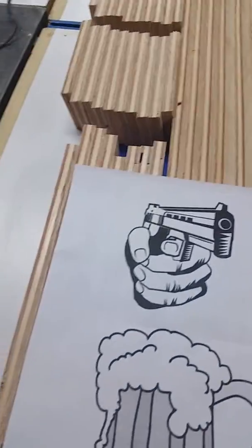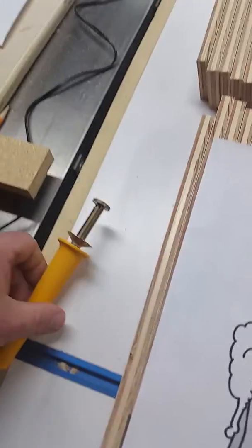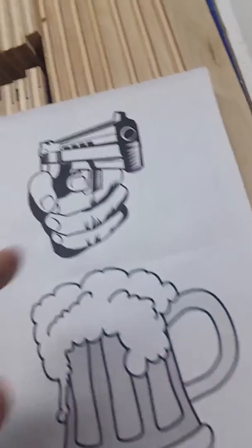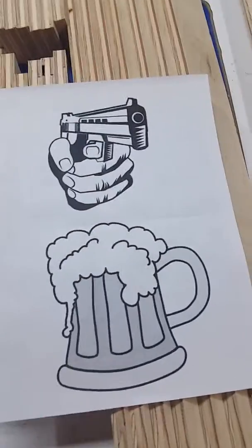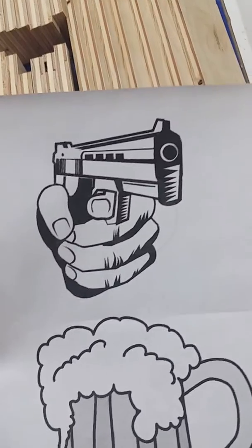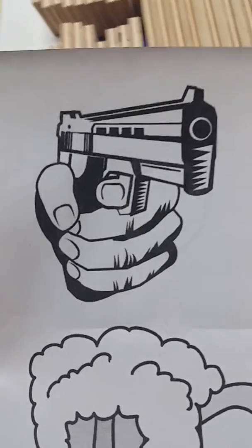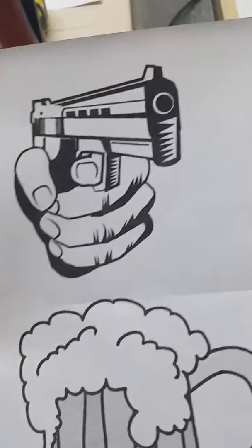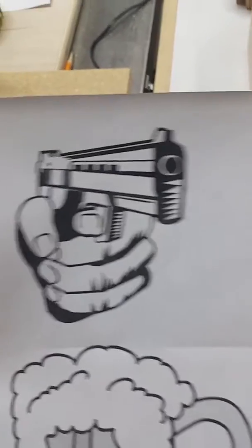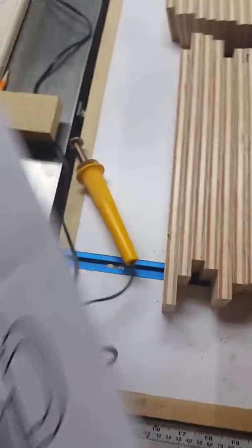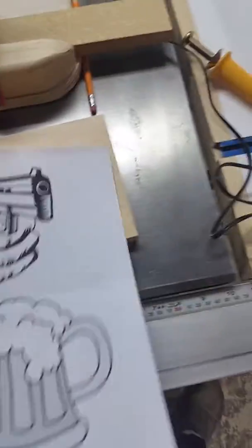One thing to point out is that it does take about five to ten minutes to heat up to its proper temperature. It needs to be really hot for it to transfer from the paper to the wood. These need to be photocopies or images printed with a laser printer, unless you're going to use inkjet with the wax paper method. This is one of the best ways that I found to do it.